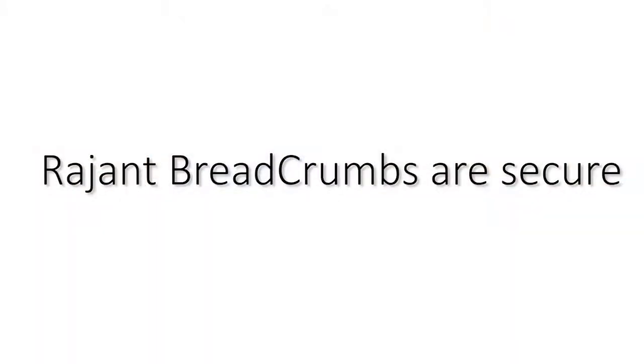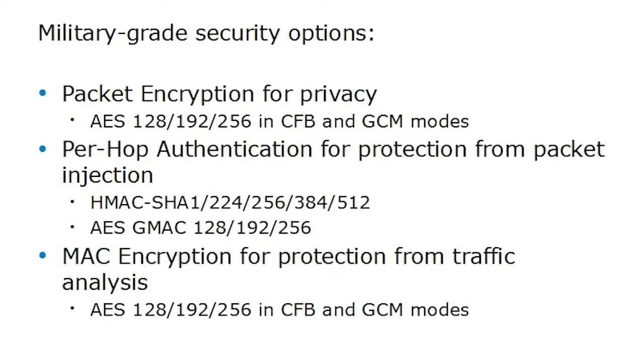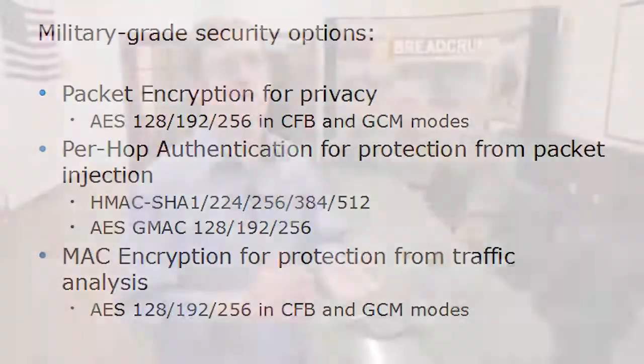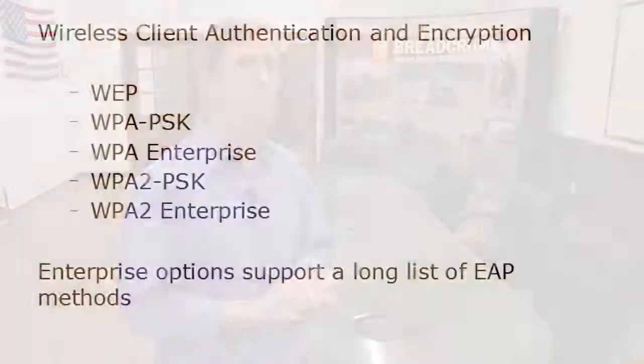Rajant breadcrumbs are secure. We have military-grade security options, in fact. We can encrypt packets to ensure privacy using AES with a variety of key sizes and AES modes. We have per-hop authentication for protection from packet injection or replay attacks, and we can even encrypt the MAC addresses of your traffic for protection from traffic analysis. We also support what you might expect for wireless client authentication and encryption, everything from WEP up to WPA2 Enterprise or Radius. And for the enterprise options, we support a long list of EAP methods. Rajant security options protect your data and your network.